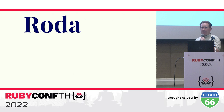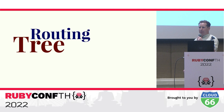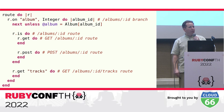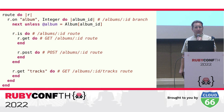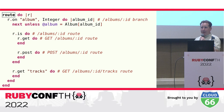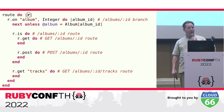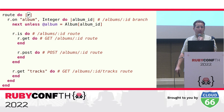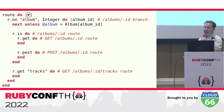What differentiates Roda from other Ruby web frameworks is that it is based on the concept of a routing tree built out of Ruby blocks. The routing tree integrates routing with request handling, which has multiple advantages compared to routing approaches used by other Ruby web frameworks. You use Roda's route method to set the routing tree for the application, and all requests are yielded to the routing tree block. Roda's convention is to use 'r' as the name for the route block variable.